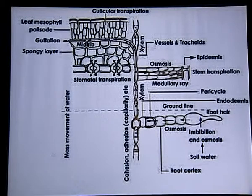So water is absorbed due to transpiration pull. The tension created by transpiration causes water to rise upward. That was about the ascent of sap. I hope the concept is now clear. Thank you.